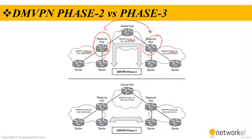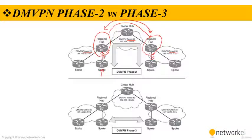For Phase 2 DMVPN tunnels, traffic from router 5 must flow to hub router 2, then be sent to router 3, and then forwarded to router 6. But for Phase 3 DMVPN tunnels, a spoke-to-spoke tunnel is established directly between router 5 and router 6, as you can see here, and the two routers can communicate directly.